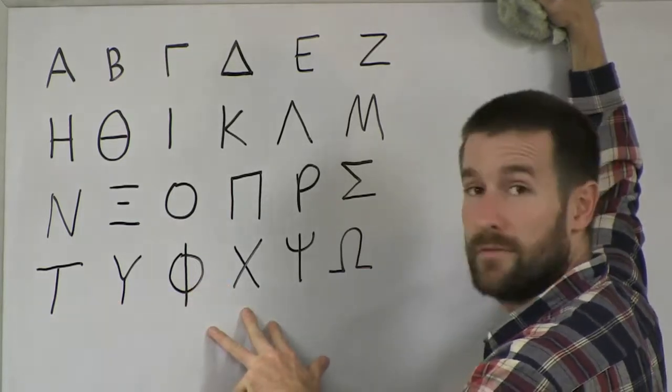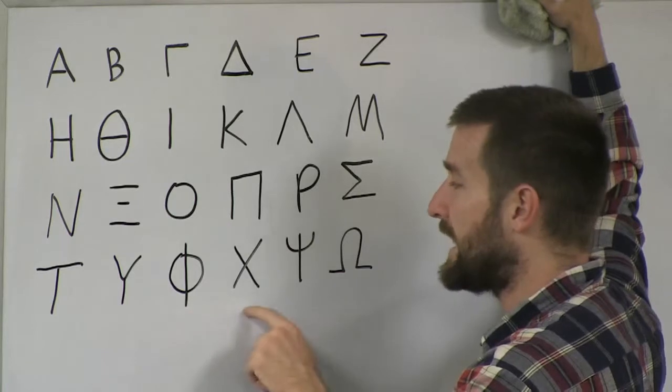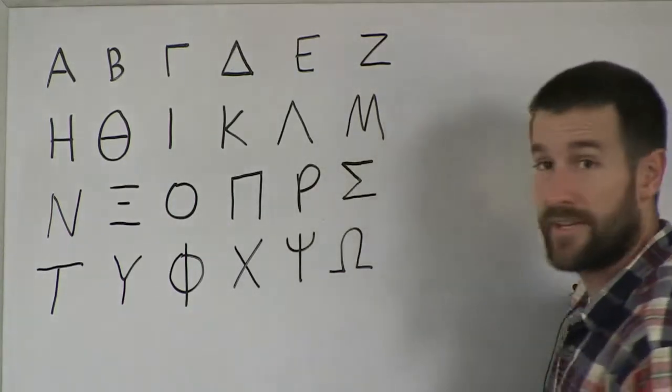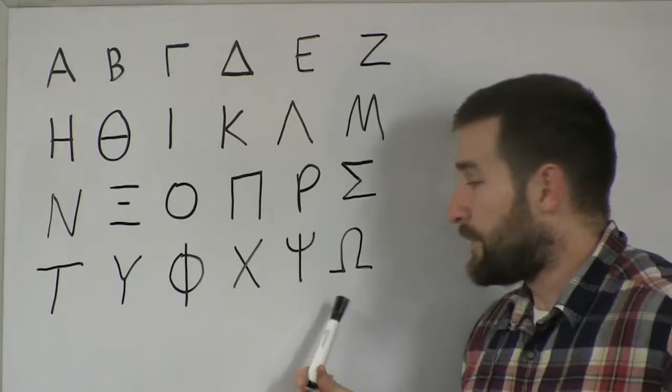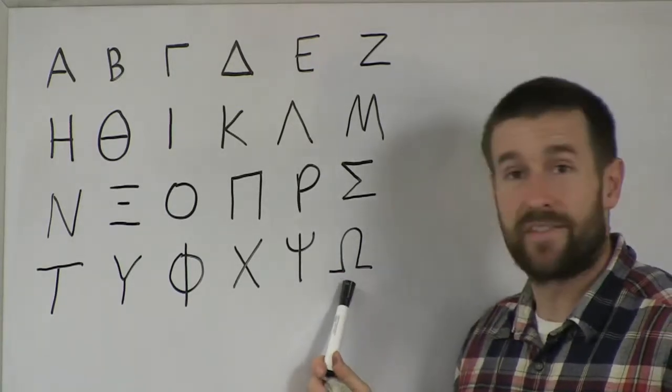the three unfamiliar letters to us in English, Phi, Chi, and Psi. And then, of course, the final letter is Omega. And if you're an electrician, you're familiar with this symbol, Omega.